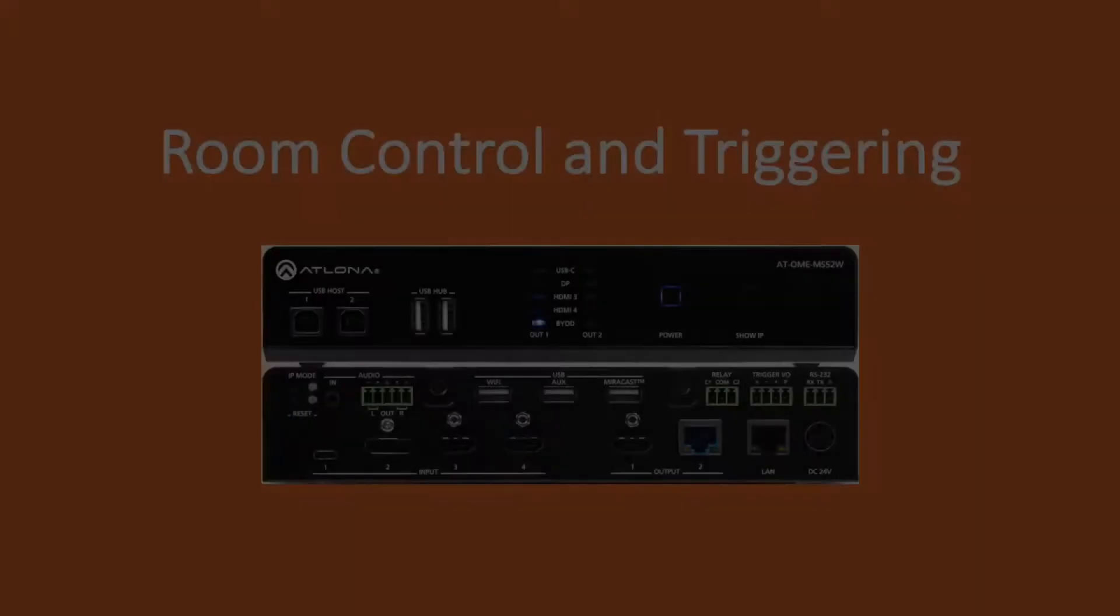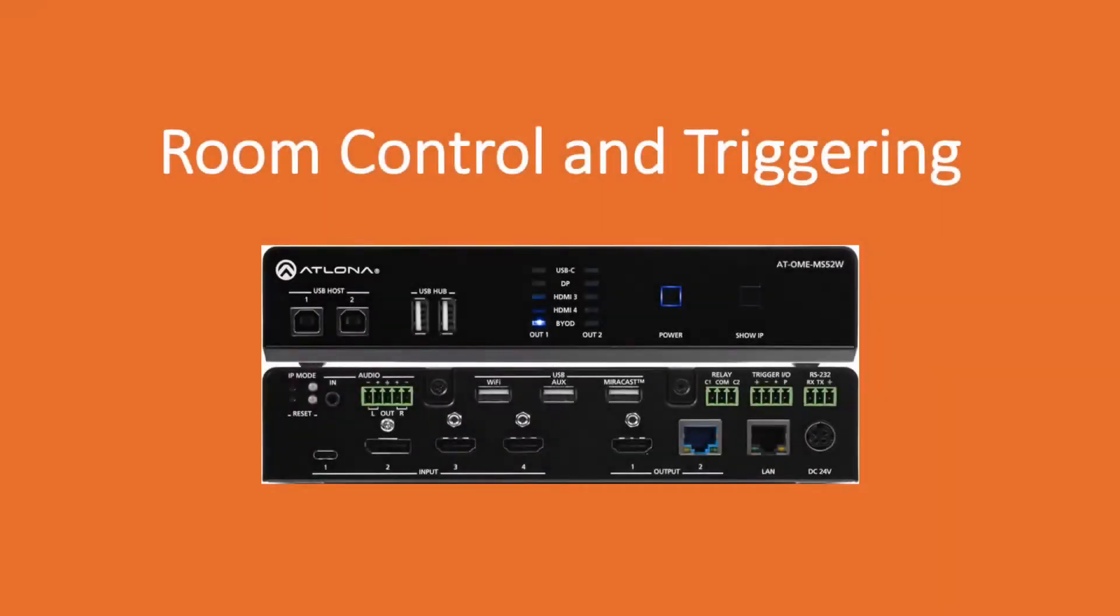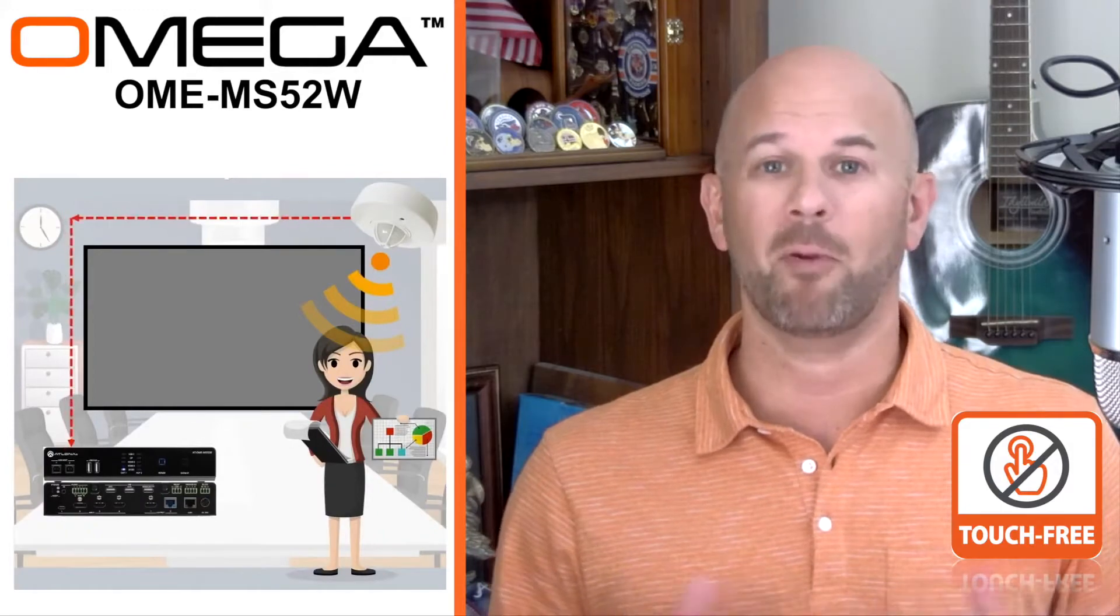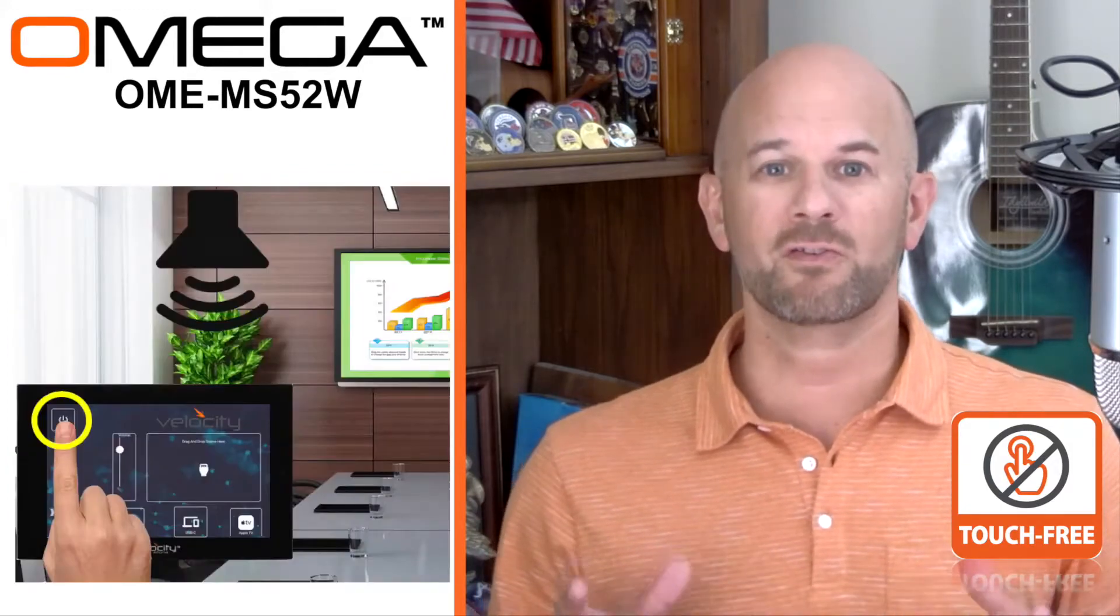Room control and triggering capability. Use the MS52W to trigger motorized screens, projector lifts, or other room-related functions. You can easily tie in this triggering with occupancy sensing, a button module, or into a control system such as Atlona Velocity.